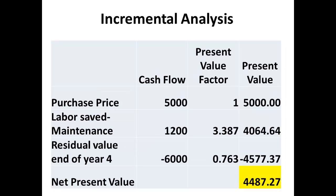We could have shown this using incremental analysis. The difference in purchase price is $5,000, and with a present value factor of 1, the present value is obviously $5,000. The result from savings less maintenance for the two machines is a cash flow difference of $1,200 per year over four years, having a present value of $4,064.64. The residual value is $6,000 less, giving a present value after four years of $4,577.37. The result is that the return for Alternative B shows a gain of $4,487.27 compared to Alternative A.